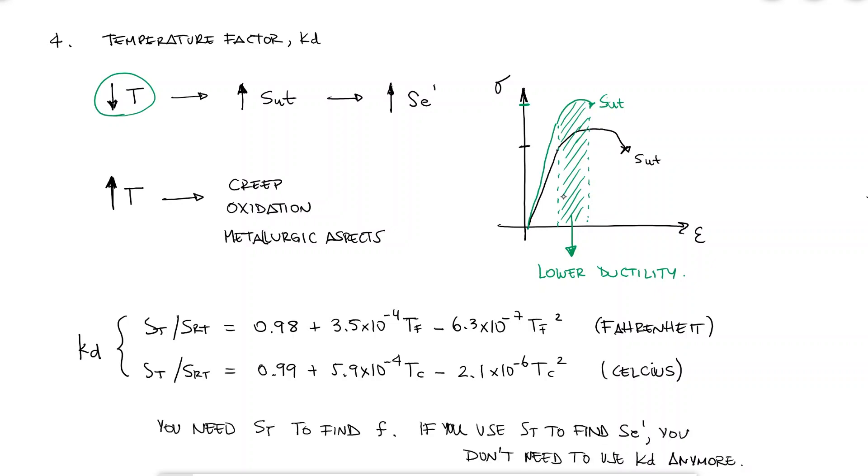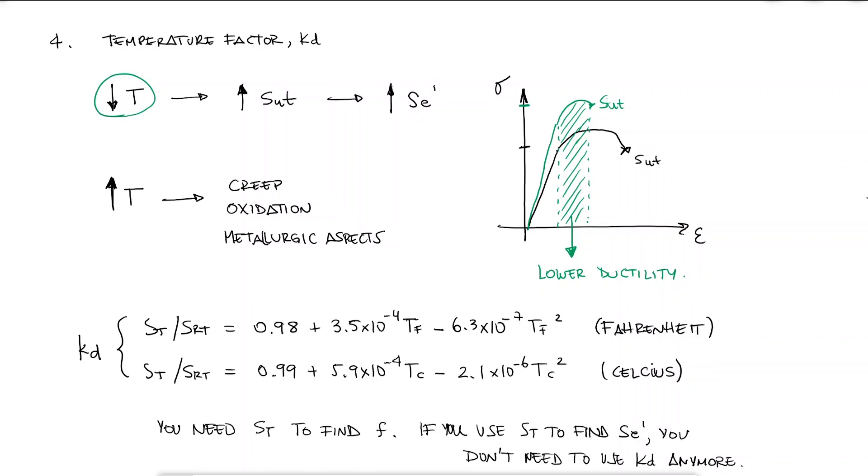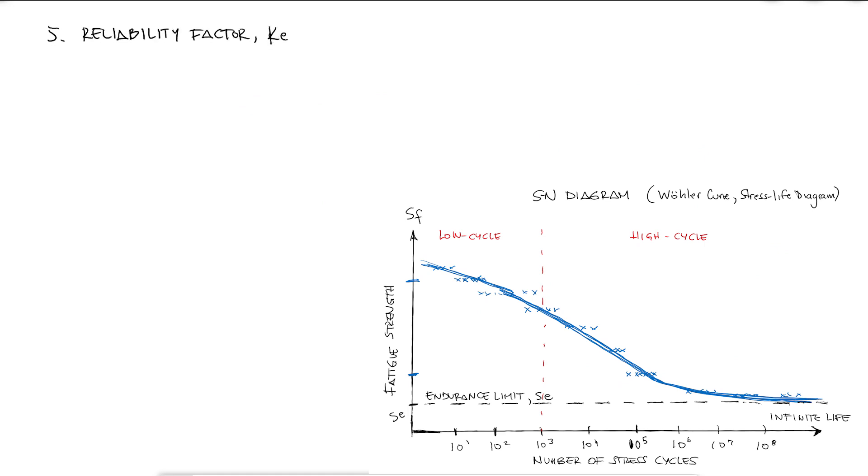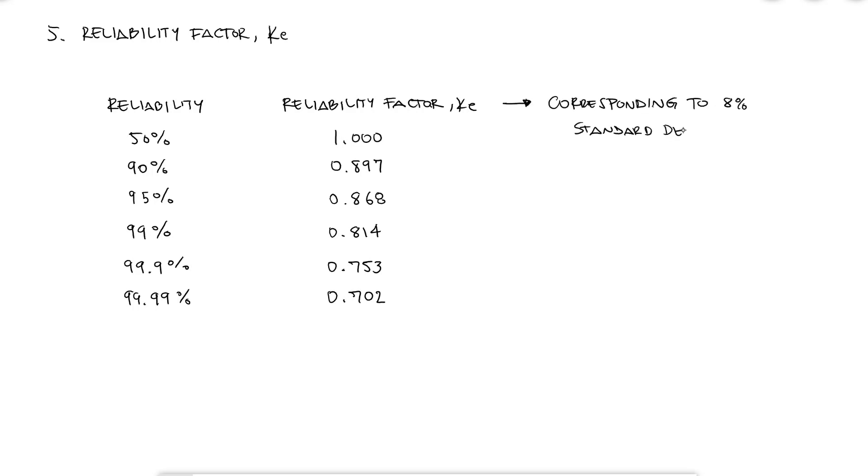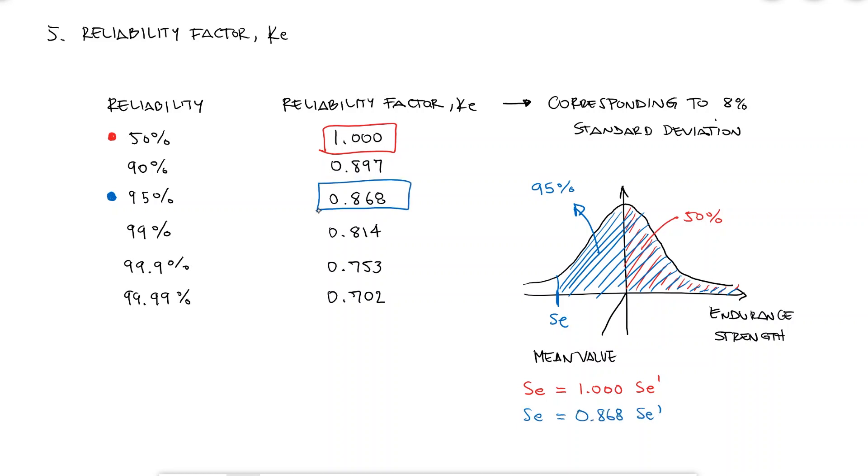Finally, and going back to a normal distribution example for material properties of several videos ago, there exists a reliability factor that will partially account for the scatter in the results that are obtained experimentally for the endurance limit. Just as I mentioned then, more sophisticated statistical analyses can be performed on experimental data, like even just understanding the distribution of your samples. However, as a conservative approach, and this is the main theme of this fatigue failure method—conservative—the reliability factors for an 8% standard deviation can be used to modify the endurance limit estimate.